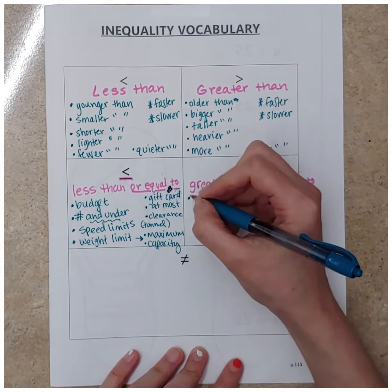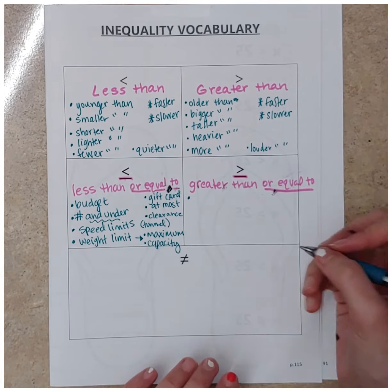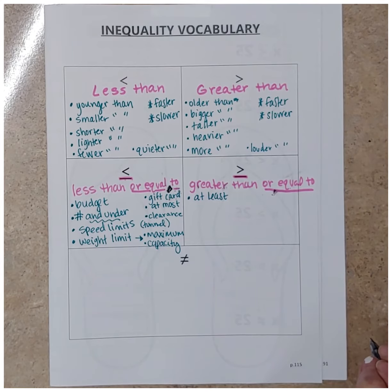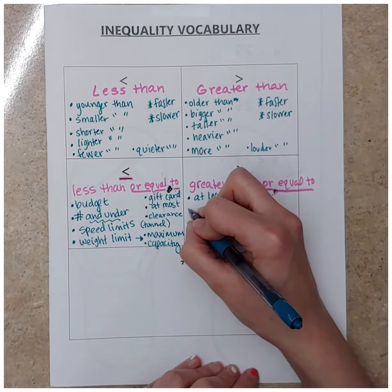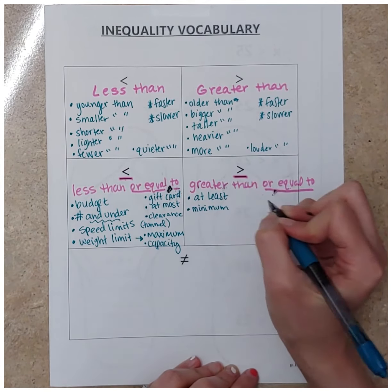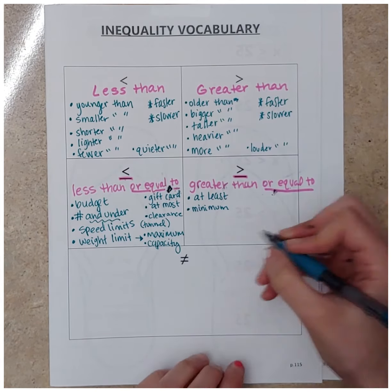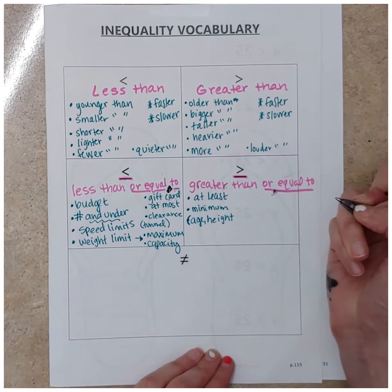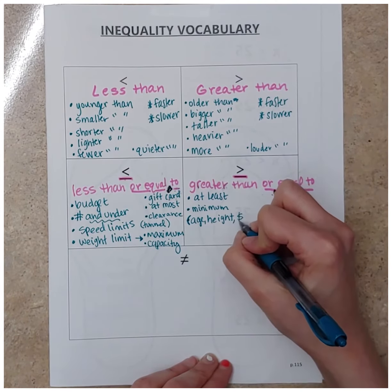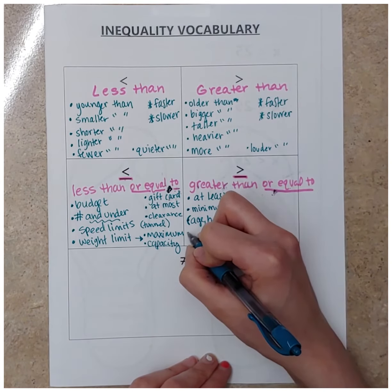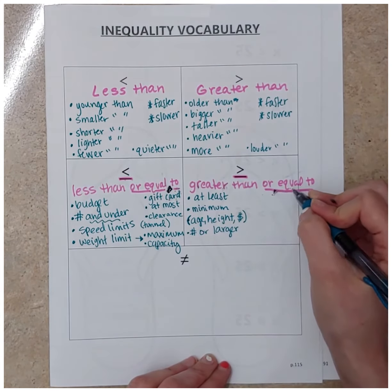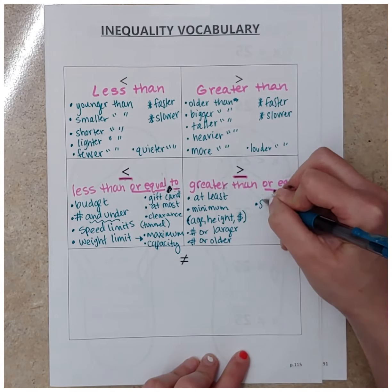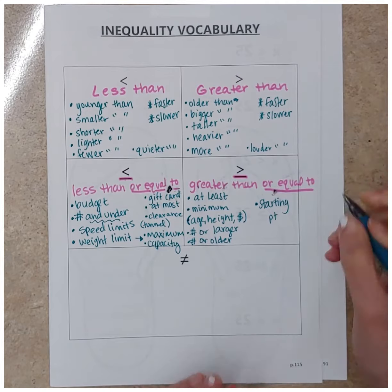On the opposite side with greater than or equal to, if we have budgets as an example, we're going to be spending 'at least' — at least $20 on your friend's birthday, meaning $20 or more. That goes along with a 'minimum.' Sometimes you have to purchase a minimum amount to get free shipping online. This can also apply to a minimum age or height — to go on a roller coaster at Six Flags you have to be a minimum height — or a minimum amount of money for free shipping. It's 'a number or larger,' 'greater than or equal to that number or bigger,' 'that number or older' — we have a starting point and we're going up from there.